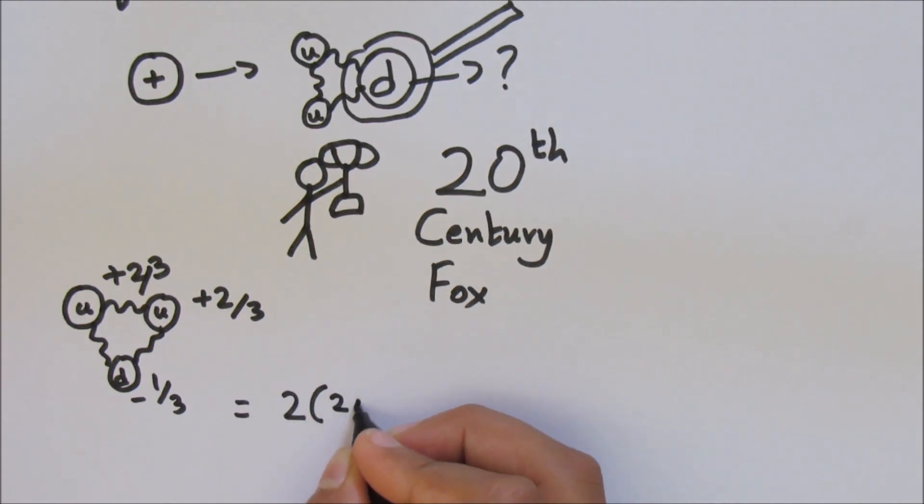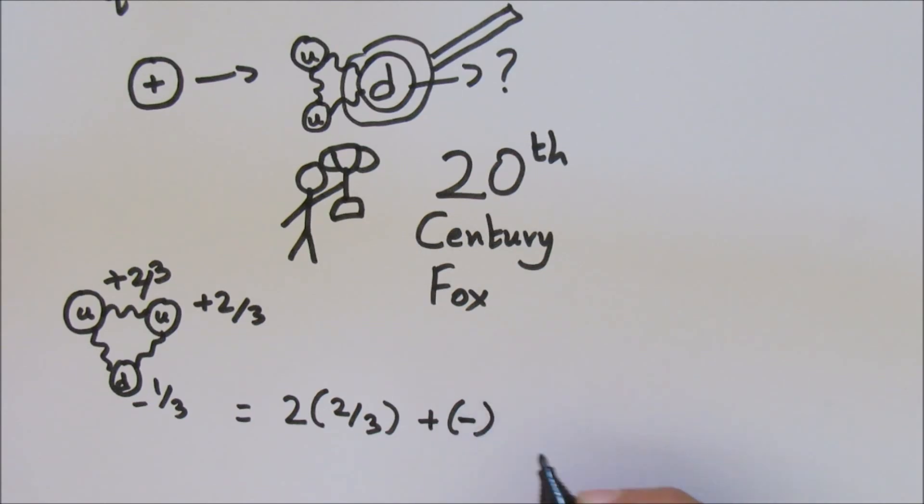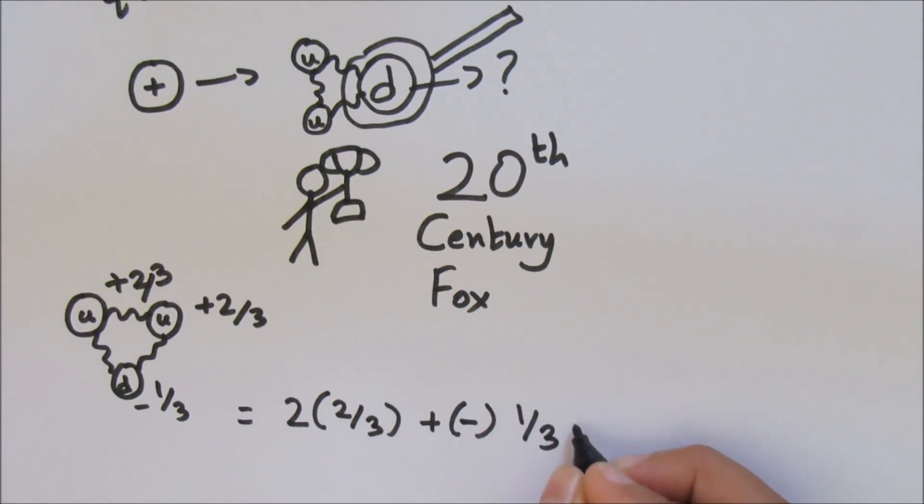A proton is made up of two up quarks and one down quark, while a neutron is made up of two down quarks and one up quark.